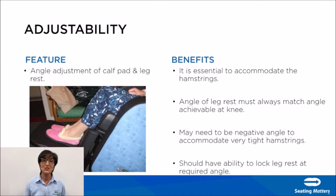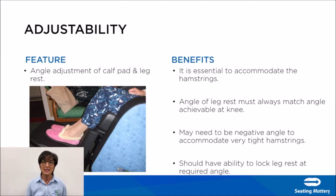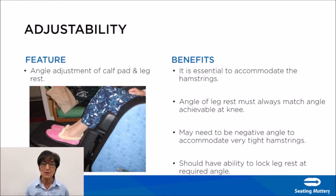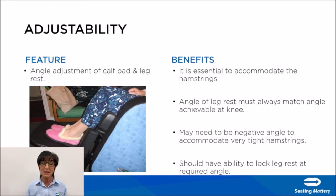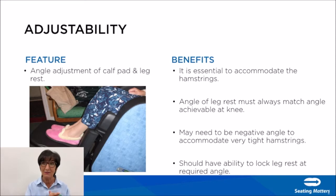The next feature is adjustment of the calf pad and leg rest. This is essential to accommodate hamstrings. The angle of the leg rest must always match the angle achievable at the knee without causing resistance. You may need to set the angle negative to accommodate someone with very tight hamstrings, and the chair should also have the ability to lock out the leg rest so a client with tight hamstrings is not able to elevate it.